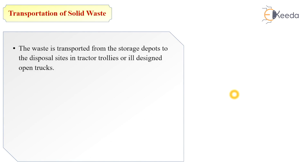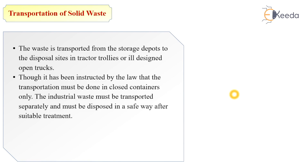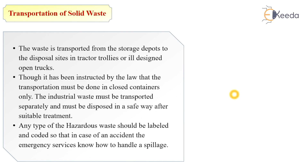After storage and handling, the next step is transportation of solid waste. Waste is transported from storage depots to the disposal site in tractors, trolleys, or trucks. By law, transportation must be done in closed containers only. Industrial waste must be transported separately and disposed of in a safe way after suitable treatment. Any type of hazardous waste should be labeled and coded so that in case of an accident, emergency services know how to handle a spillage.